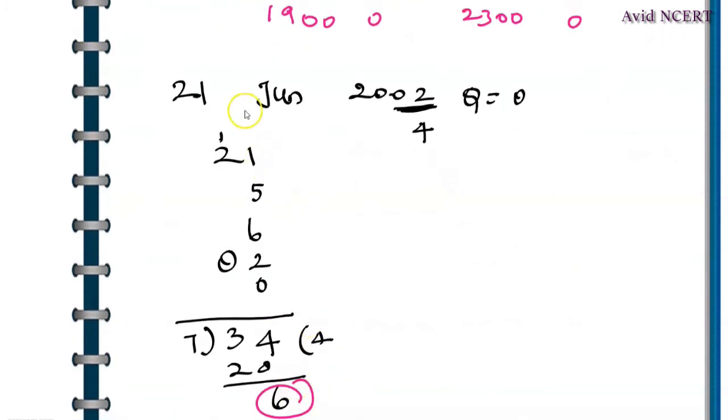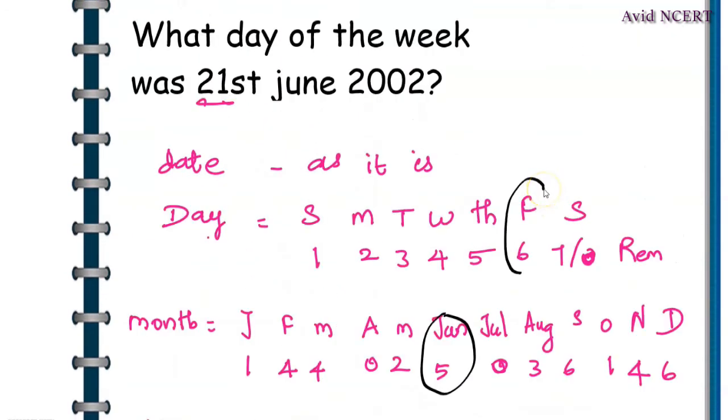The code for 6 is Friday, which means 21st June 2002 was Friday. Thanks for watching. If you have any doubts, please let me know in the comments.